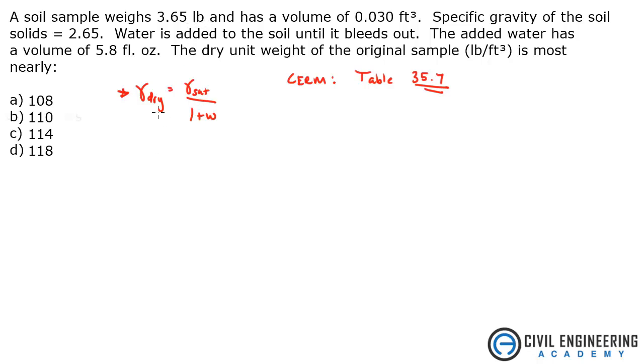First thing we can do is we can get what gamma of the soil sample is. This is just a moist unit weight as we pulled it out. So the weight was given as 3.65 pounds, divide that by 0.03 cubic feet, and that gives me 121.67 pounds per cubic foot.